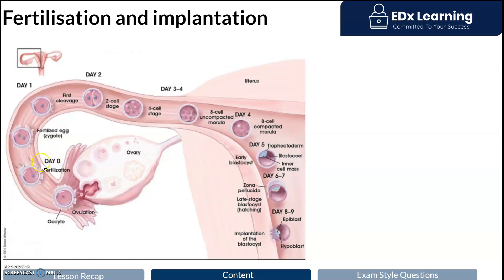This is when spermatozoa — you can see these little white projections here — will combine, and one will fuse with the ova. Now you have a zygote, and the zygote will start to undergo mitosis. When we just have a compact ball of cells, we call this a morula.